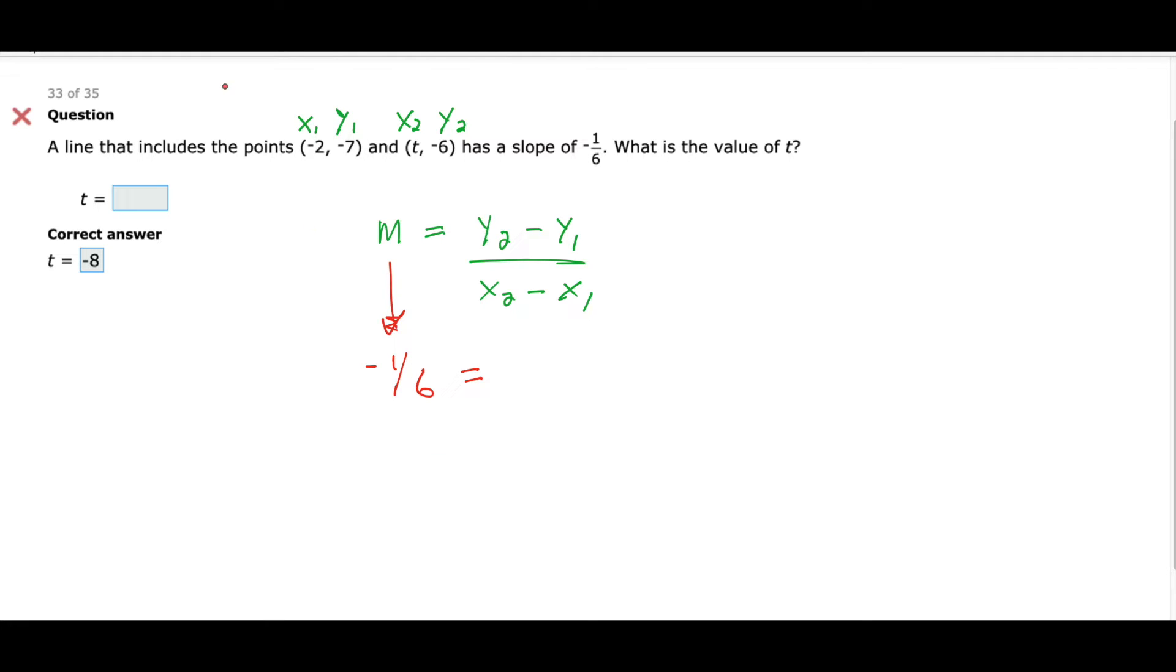Oh, sorry. Wait, and then you shouldn't write like that either. -1/6. Okay, equals—go ahead. Sorry, negatives—because I was looking at -6 plus 7. -6 minus minus 7, which is plus 7. Okay. Over t plus 2.